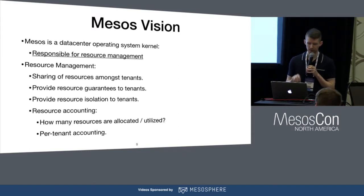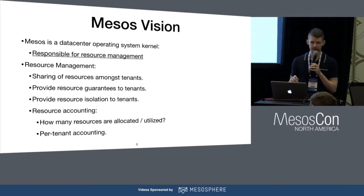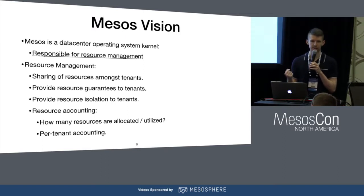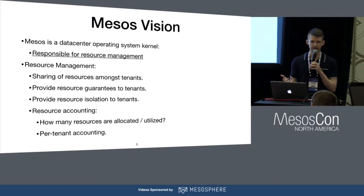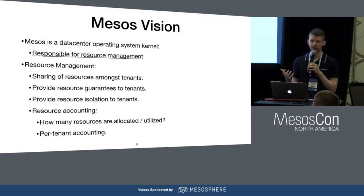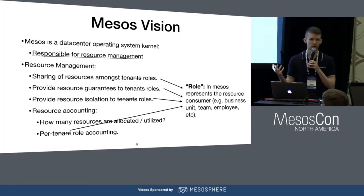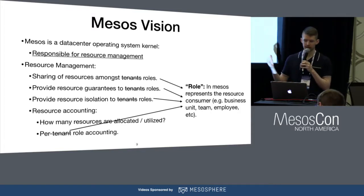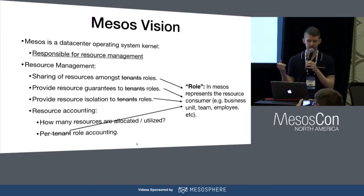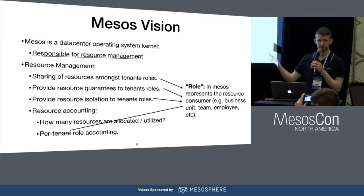Let's talk about what exists for multi-tenancy in Mesos today. The vision for Mesos is that it's the kernel of a data center operating system, and one of its core responsibilities is resource management. Resource management means sharing resources amongst tenants, giving guarantees to those tenants about how many resources they can have, providing isolation, and providing accounting so you can tell on a per-tenant basis how much people are using. In Mesos, we don't use the word 'tenant' — what exists is the concept of a role, which represents a consumer of a resource. That's how we capture business units, teams, and so on.